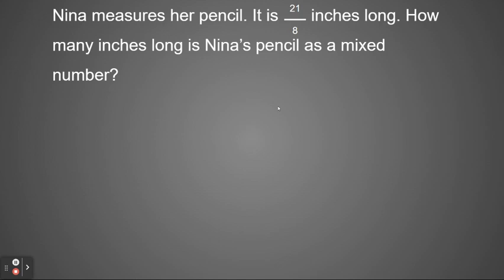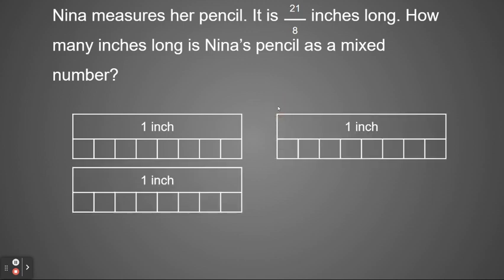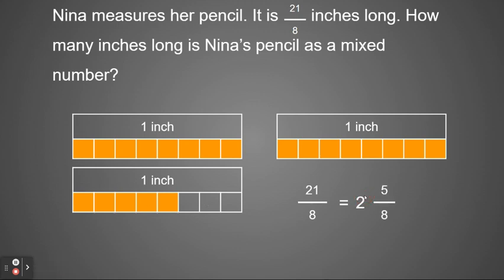So I know I'm going to need more than one. Eight plus eight is sixteen, so I need more than two — but not more than three. I'm going to need three sections. So I'm going to start by shading in twenty-one: I have eight, sixteen, and then five more makes twenty-one. So I've colored in twenty-one eighths. Now looking at my picture, I see that I have two wholes and then a fractional part of five eighths. So my mixed number would be two and five eighths.